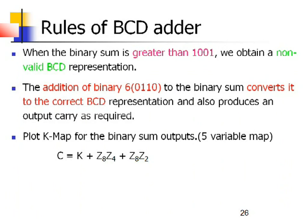These are the rules of the BCD adder. When the binary sum is greater than 1 0 0 1, we obtain a non-valid BCD representation. As we know, with the help of BCD format we can only represent from 0 to 9. But if the binary sum is greater than 9, we obtain a non-valid BCD representation — for example, 10 is greater than 9, so we get a non-valid BCD representation.